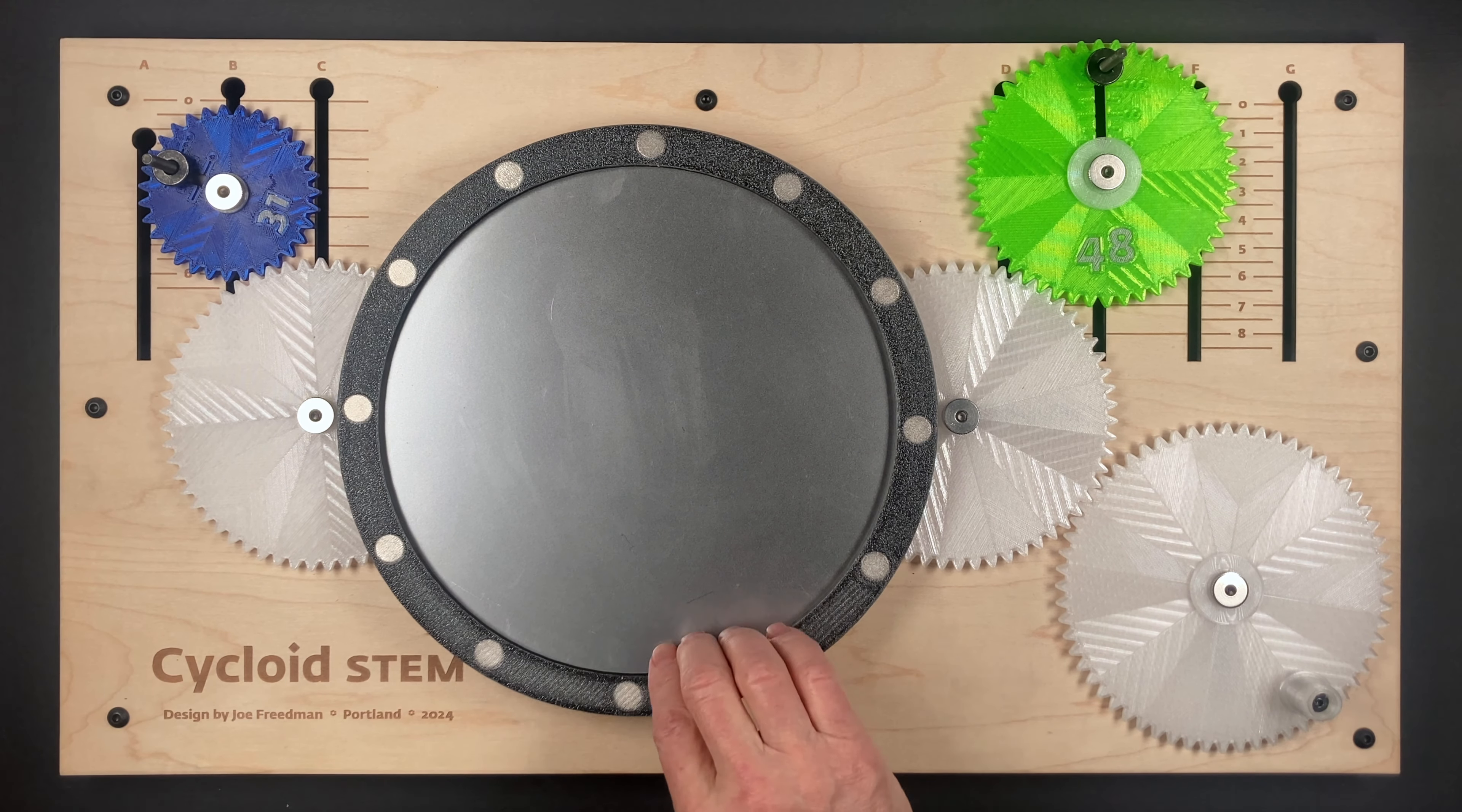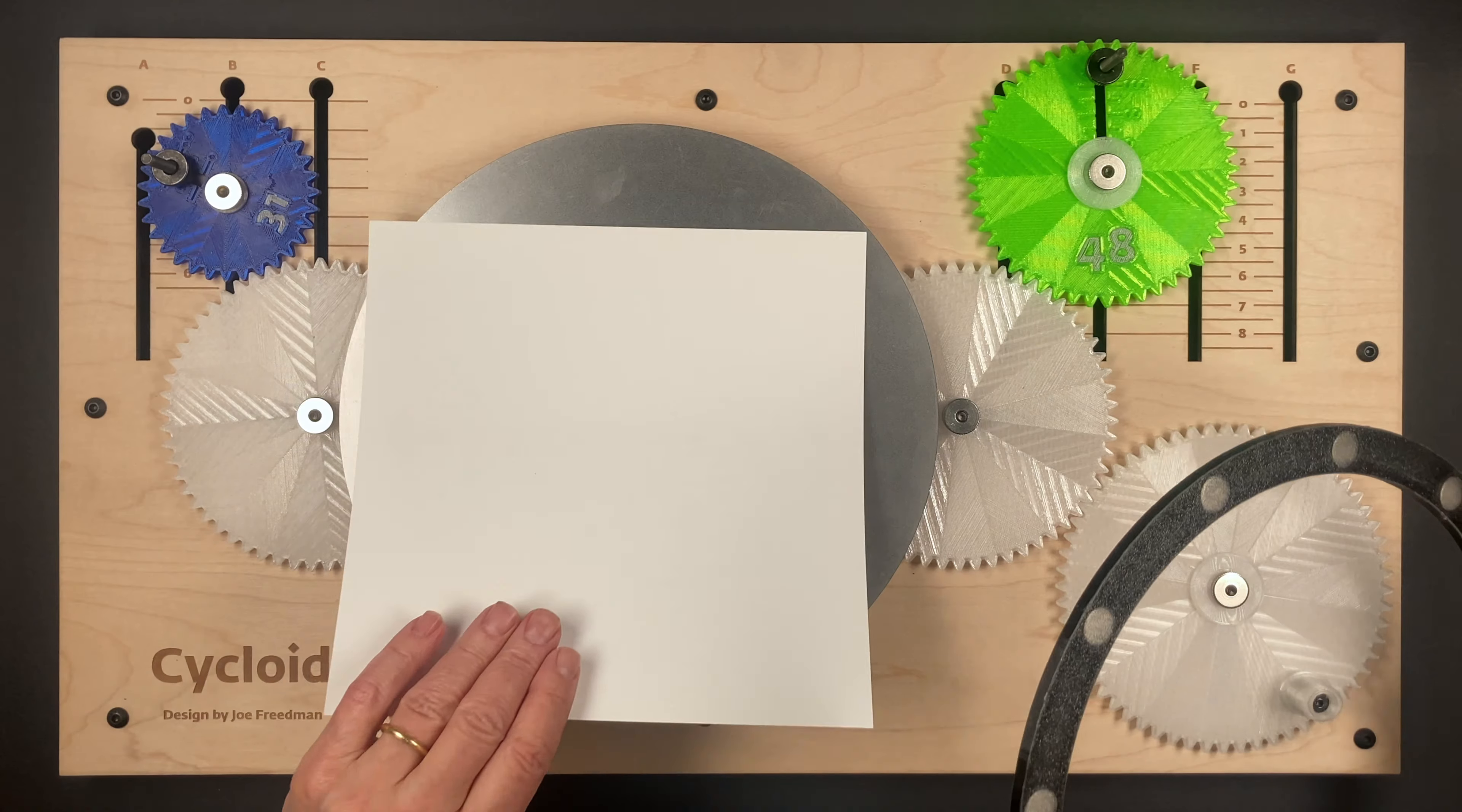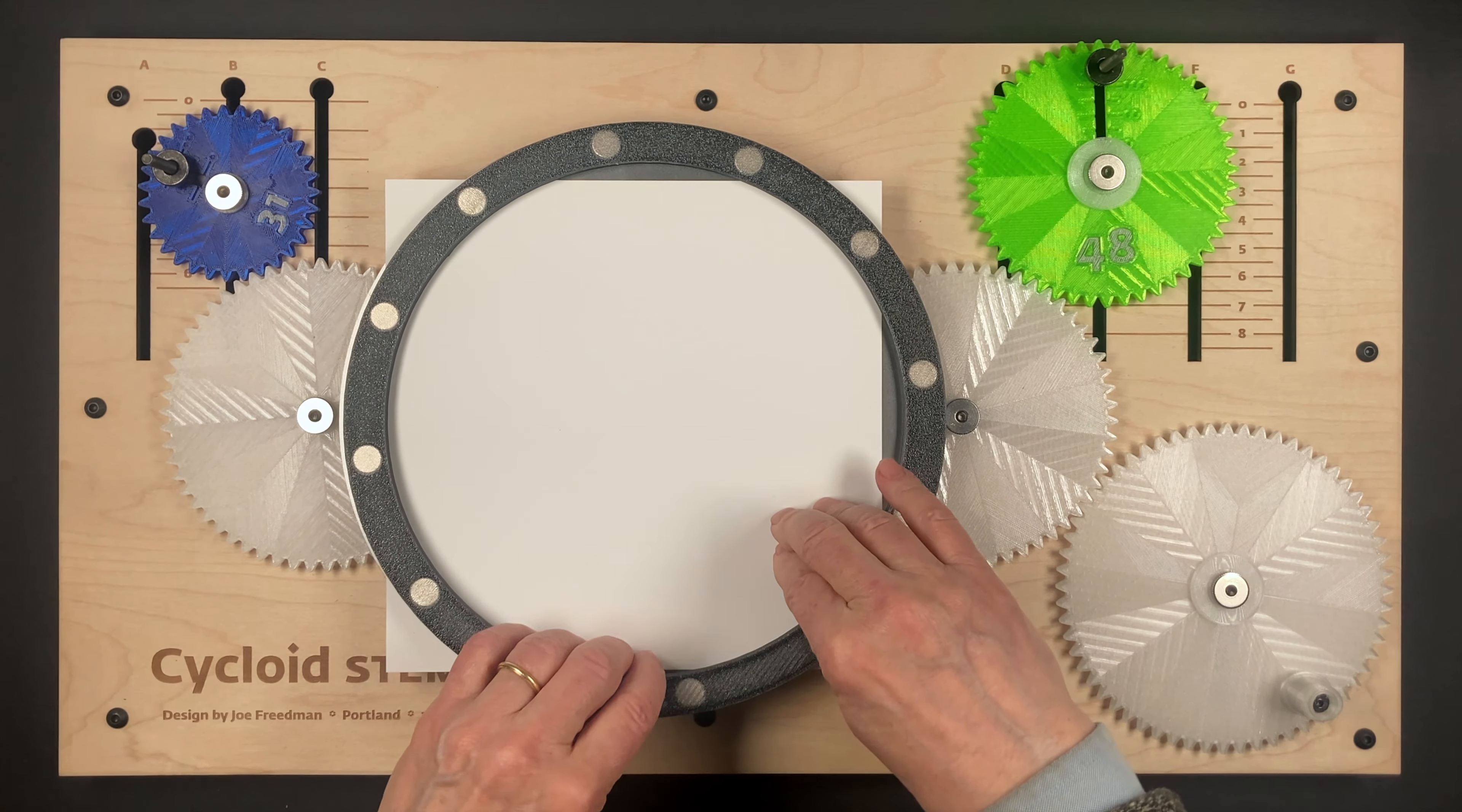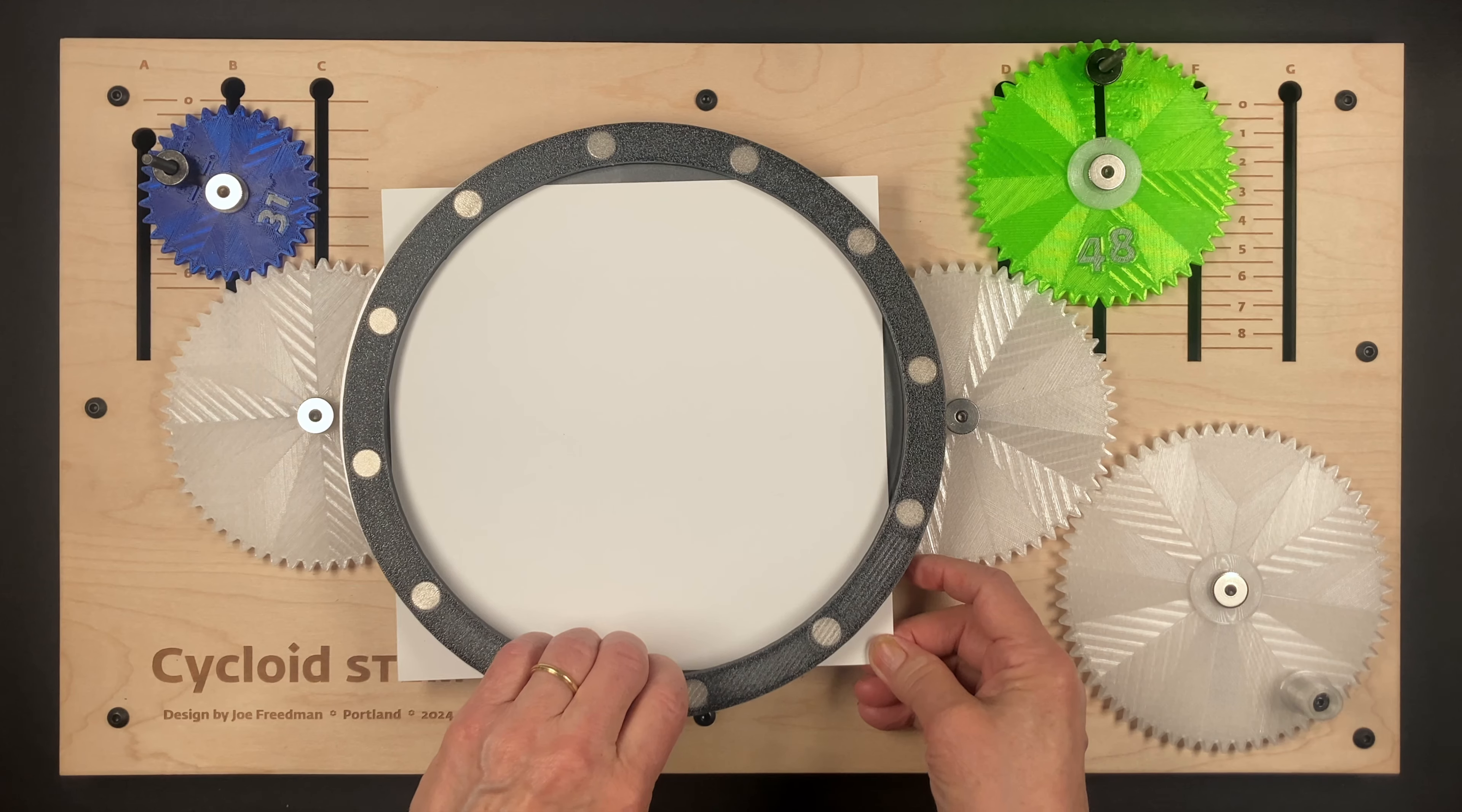Just lift up the magnetic ring, slide the paper in, put the ring back down, and center the paper a little bit.